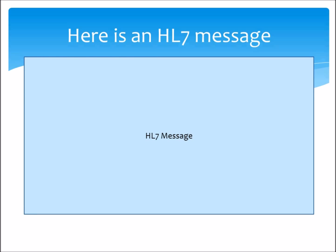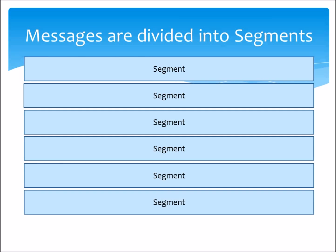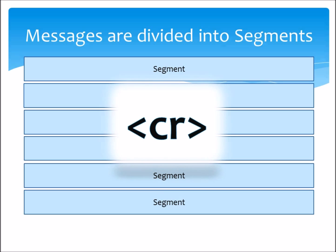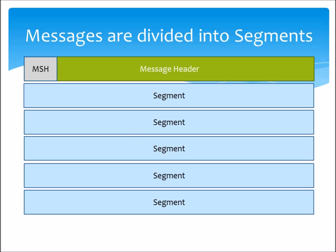Now assume that this is our HL7 message. All messages are divided up into segments of related information. These are always separated by carriage returns, so each of these segments is simply a separate line of the message. The first segment in every HL7 message is always the message header. This segment conveys the metadata of the message, like who sent it and when. The message header is indicated in the first three letters of the segment as MSH.